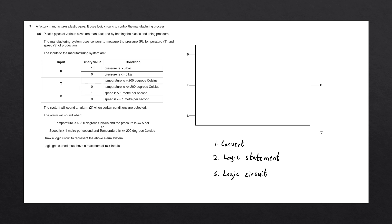The first step is to take this English statement and convert it using our table. You can see that this statement is just comprised of conditions from our table. Looking at our table, it includes inputs that are used and the conditions which manipulate these inputs.